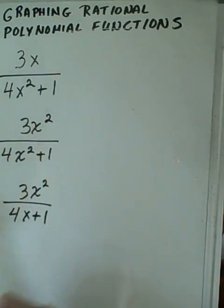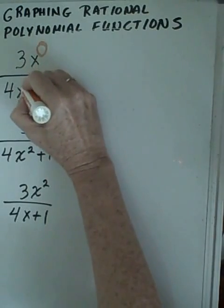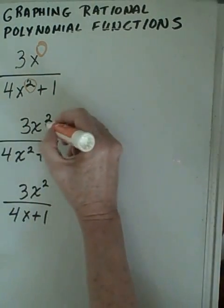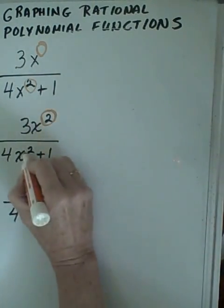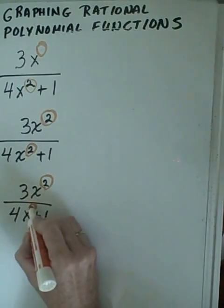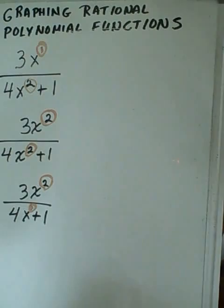The degree, if you remember correctly, is the value of the highest exponent, or the term with the highest exponent. So notice I'm circling the degree measures here. We don't have one written; the power of one is understood to be here, just like it is to be here. So let's look at these.